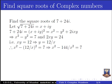Multiplying throughout by x square, the first term becomes x to the power 4 minus 144 equal to 7x square. On rearranging, we get x to the power 4 minus 7x square minus 144 equal to 0. We can think of this as a quadratic equation with x square as the variable.